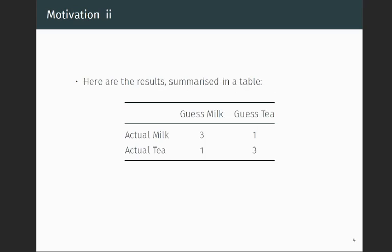And here are the results of the experiments summarized in the two by two table. So each row corresponds to the actual truth, so whether a cup was filled with milk first or tea. And then for the columns, what we have is the guess from the lady. So for example, we can see that she correctly guessed that three cups were filled with milk first. And then she missed one. And then similarly, she correctly guessed that three cups were filled with tea. And she missed one of those as well. And so we get this contingency table here.